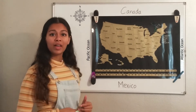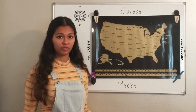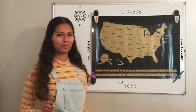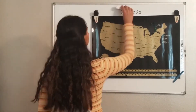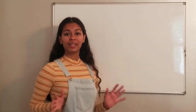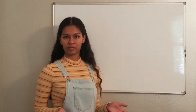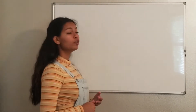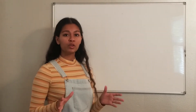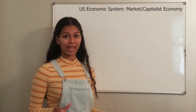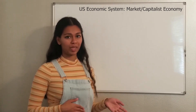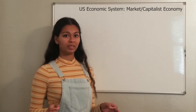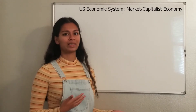That covers U.S. geography. Now let's get to some miscellaneous items you need to know for the test. First, the U.S. economy is called a market economy or a capitalist economy — that is the economic structure the U.S. operates with.